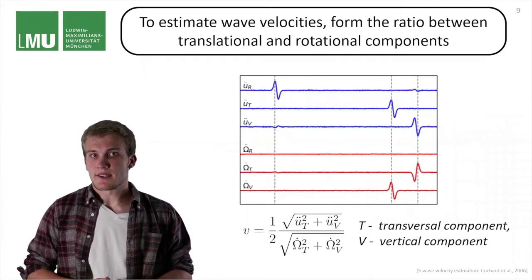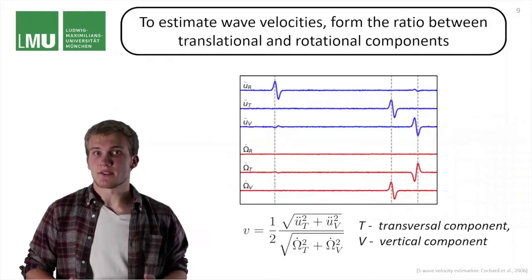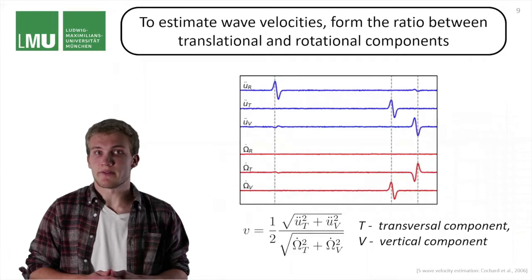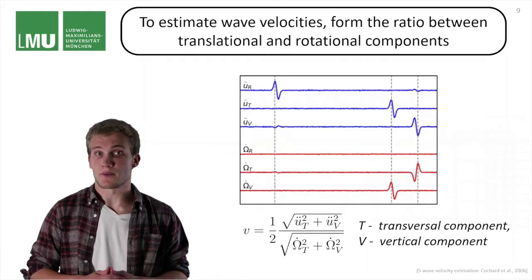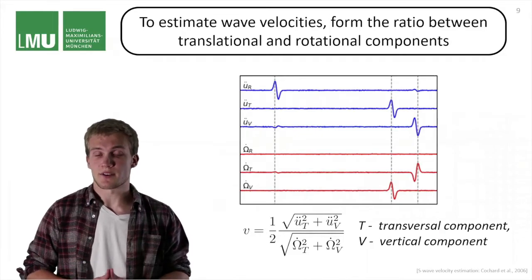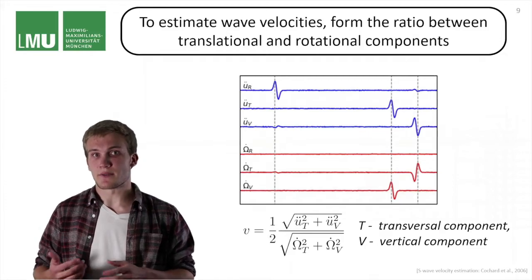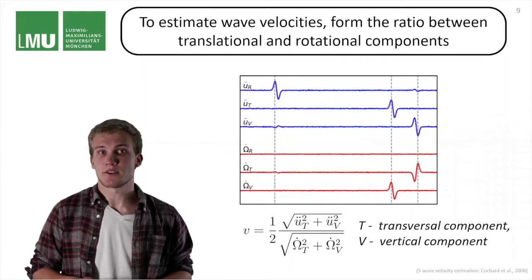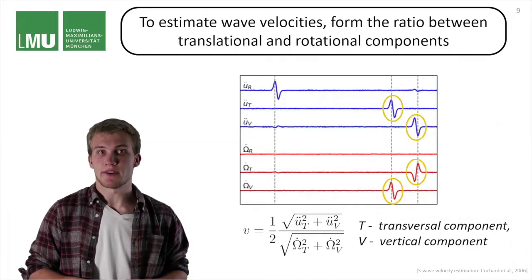Other studies have already shown that you can use the combination of translational and rotational measurements to estimate S wave velocities. And this also works for anisotropic media. Here we can take the ratio between translational and rotational signals to estimate QS1 and QS2 wave velocities.